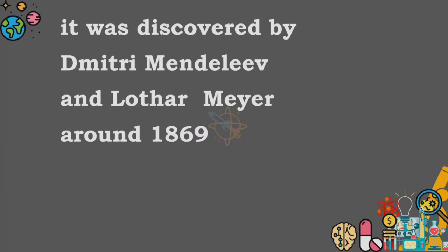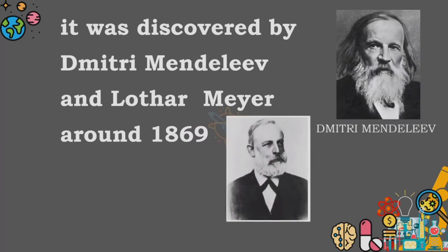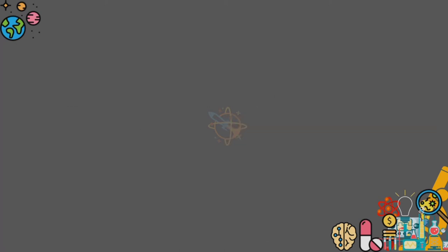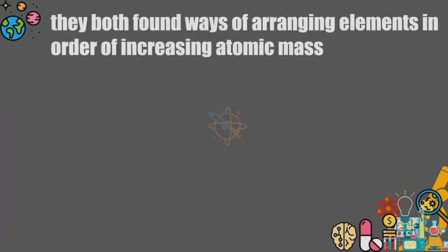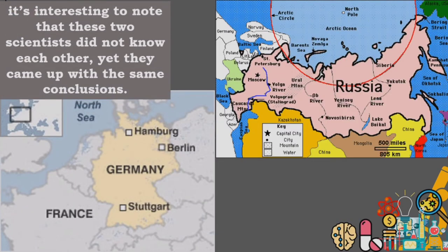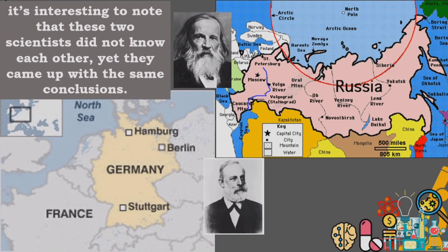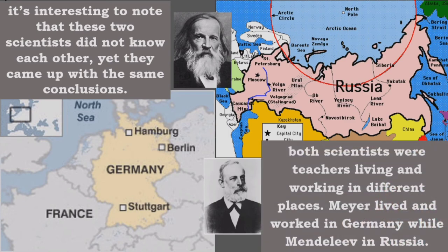It was discovered by Dmitry Mendeleev and Lothar Meyer around 1869, who found ways of arranging elements in order of increasing atomic mass. It is interesting to note that these two scientists did not know each other, yet they came up with the same conclusions. Both scientists were teachers living and working in different places. Meyer lived and worked in Germany, while Mendeleev in Russia.